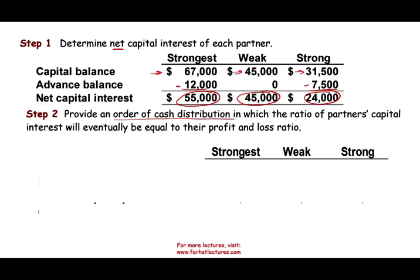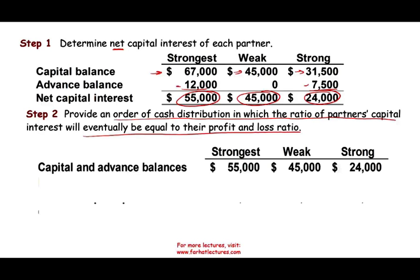In step two, we rank the partners by their loss absorption potential — that is, how much total losses each can absorb before their capital is wiped out. We calculate this by dividing each partner's net capital balance by their profit/loss ratio. For Strongest: $55,000 ÷ 0.40 = $137,500. For Strong: $24,000 ÷ 0.20 = $120,000. For Weak: $45,000 ÷ 0.40 = $112,500. So Strongest can absorb the most losses, making them the strongest position, followed by Strong, then Weak.